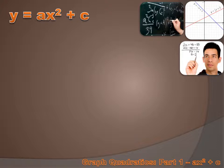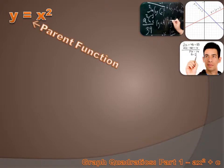But what if c were zero and a were one? Well, we could rewrite this expression as y equals x squared. That's a quadratic expression too. As a matter of fact, that's referred to as the parent quadratic function — y equals x squared. All the other quadratic functions are variations of this parent function.